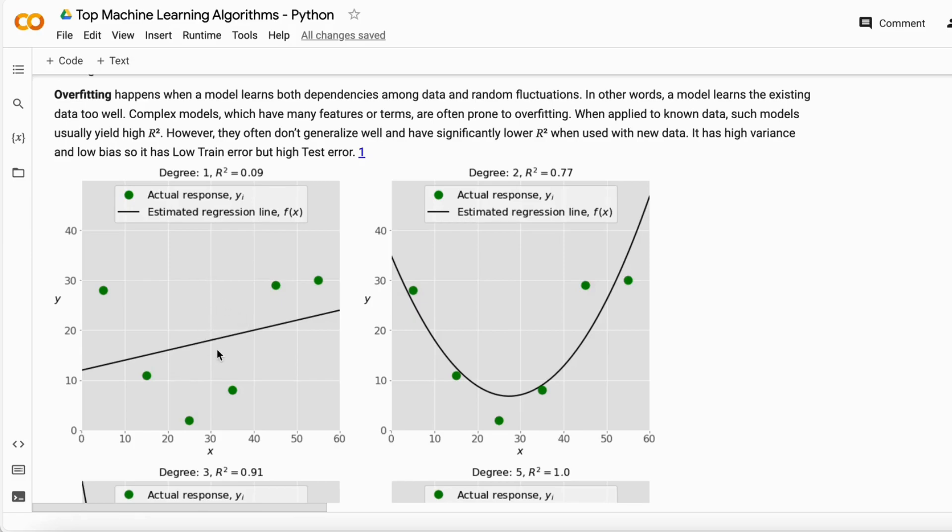Then we make the degree 2. In that degree 2 the model accuracy got increased and it started capturing the variations or the fluctuations in the data, but not quite well because these two or three data points are still very far away from the line.